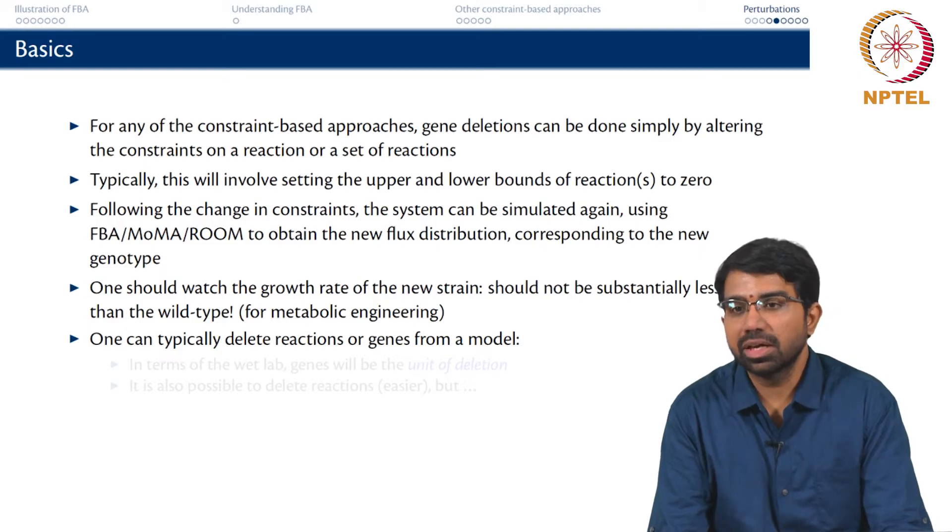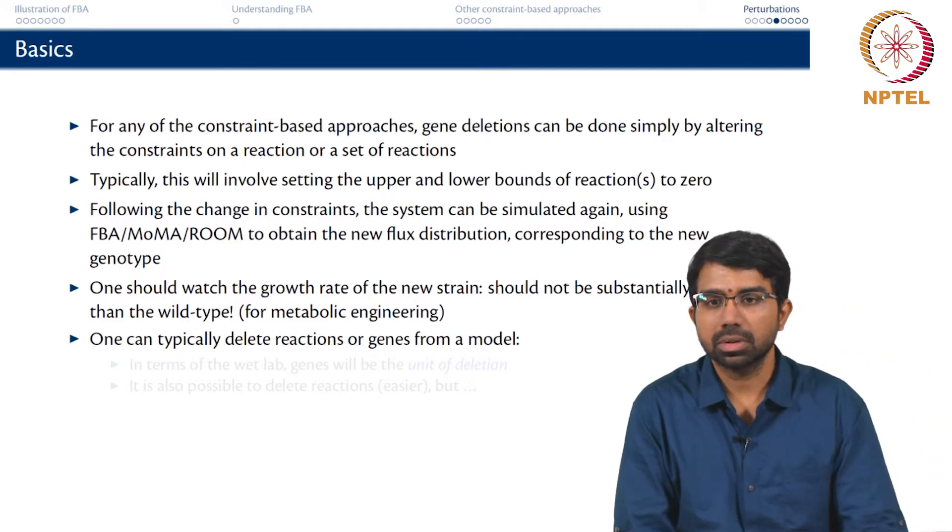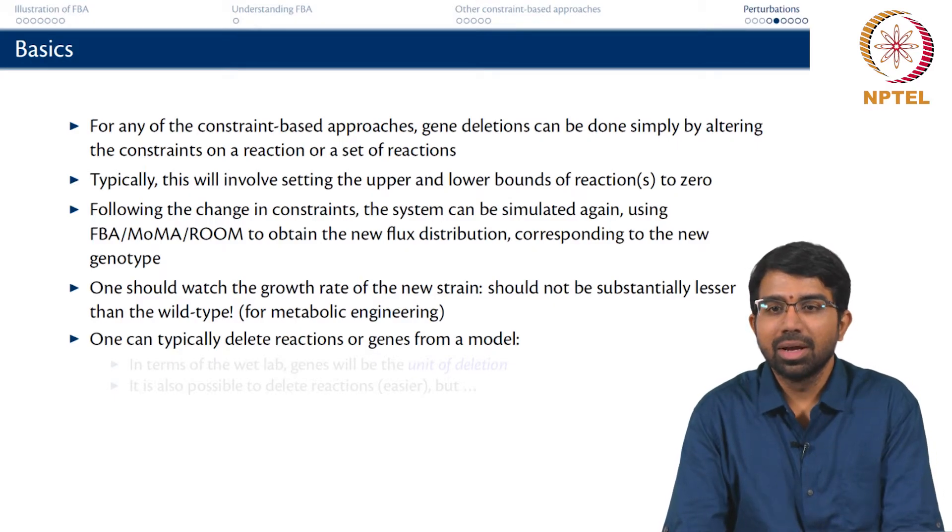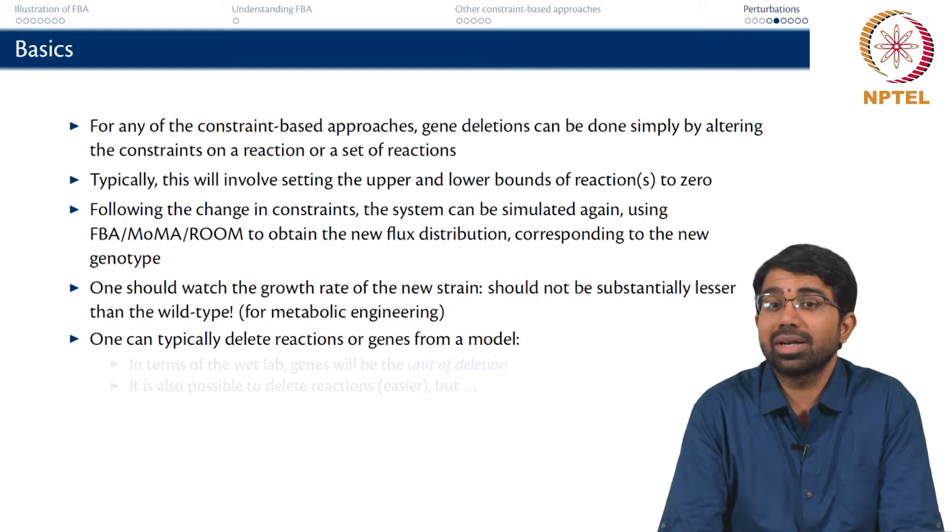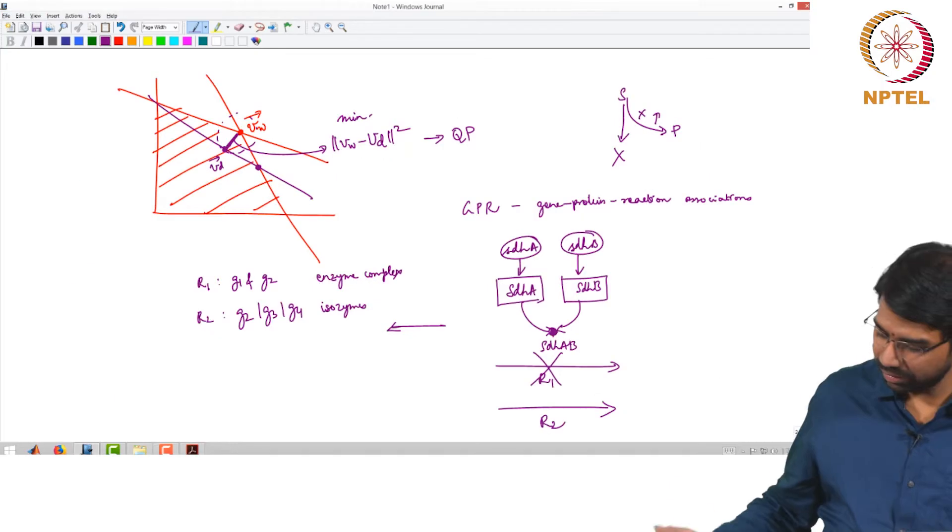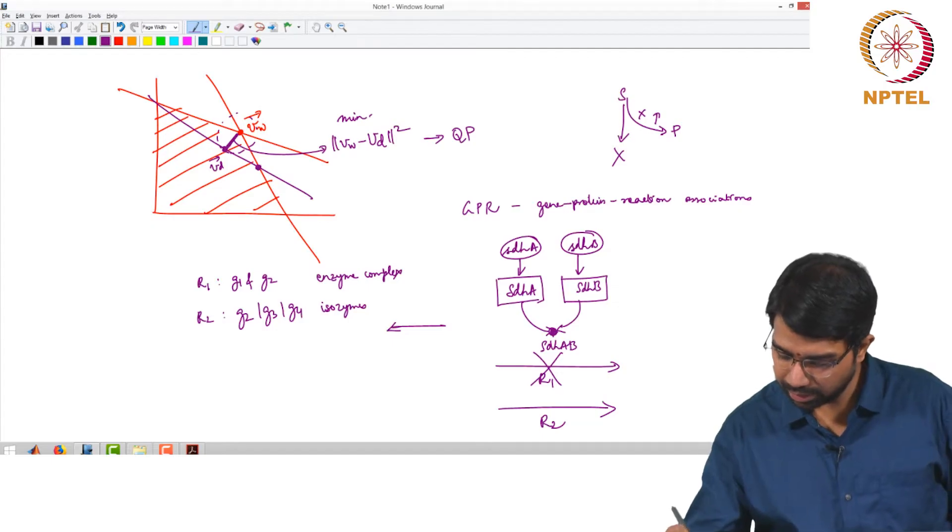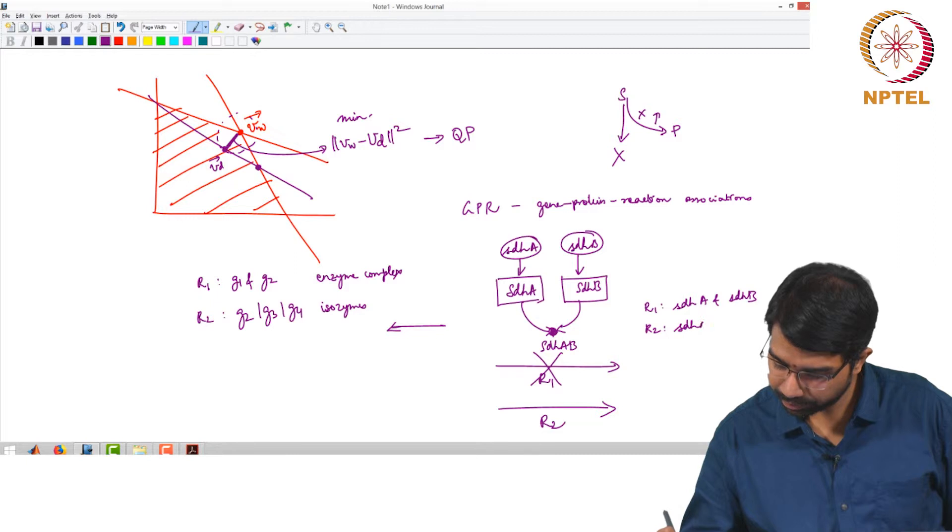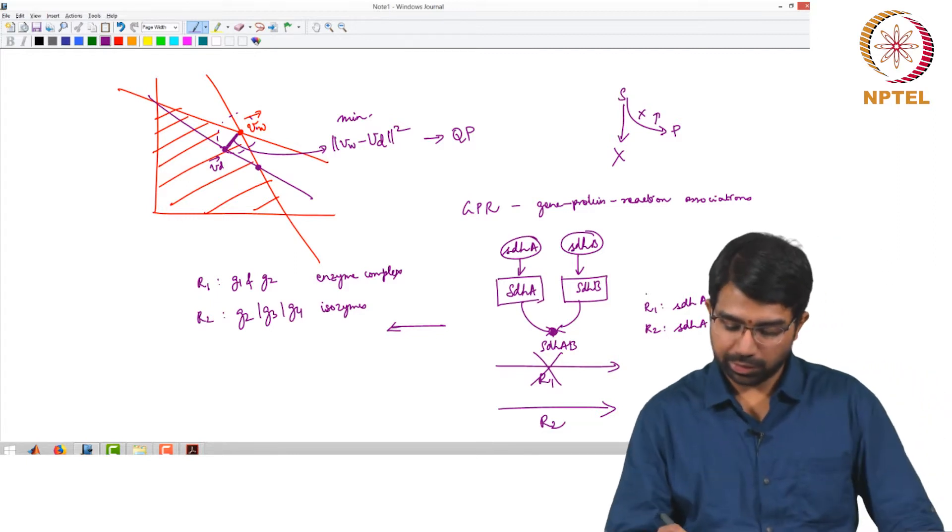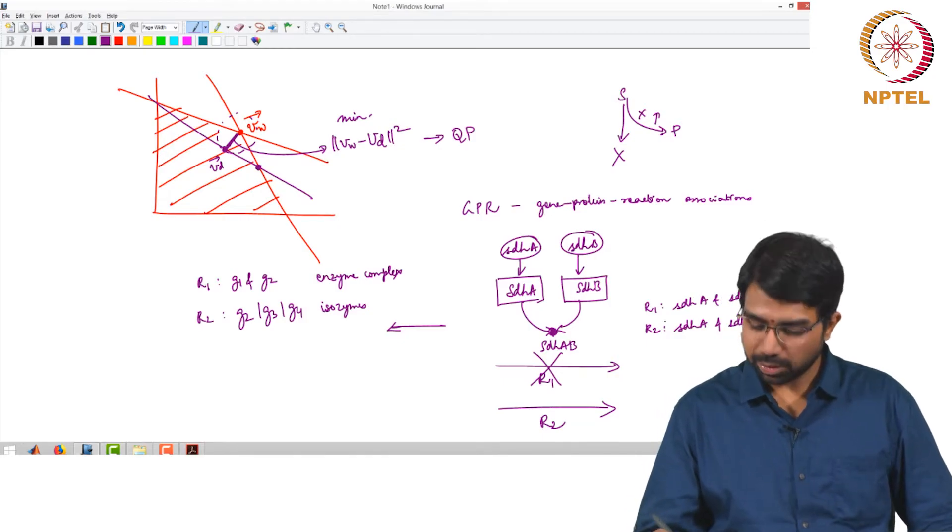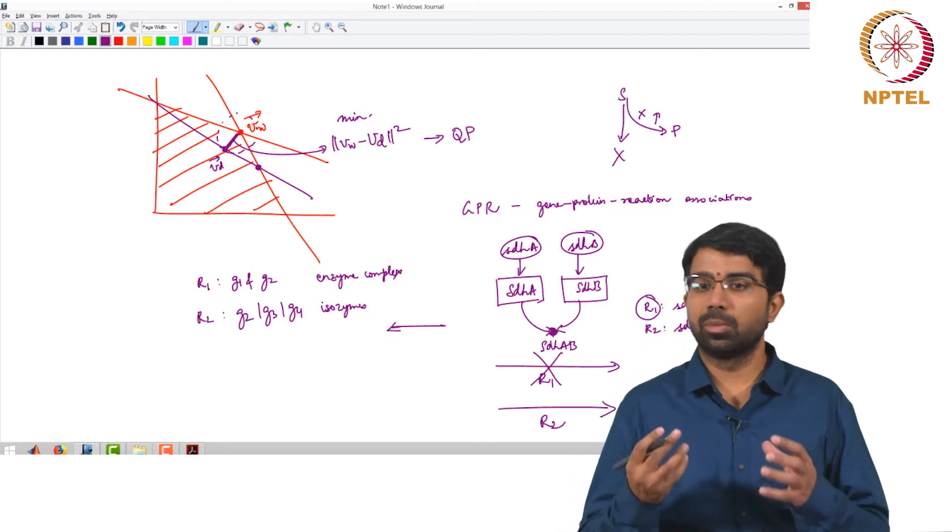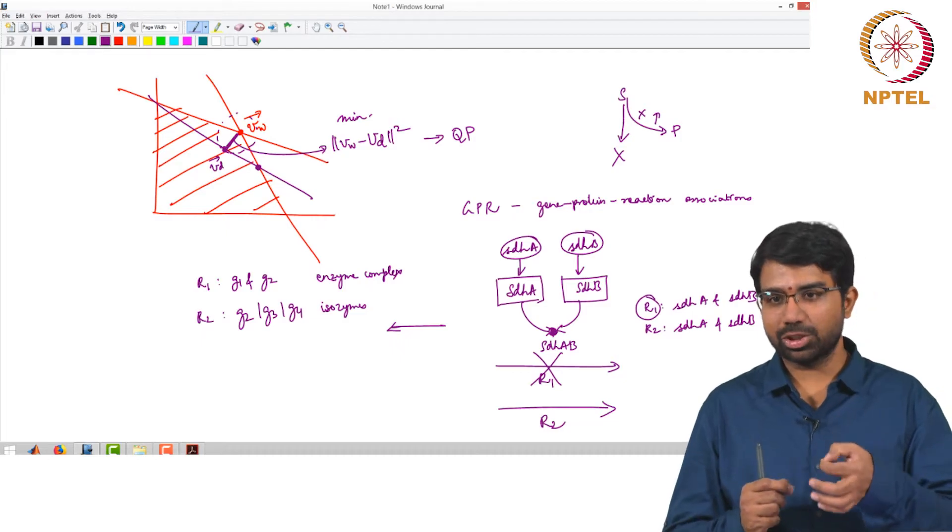You can either delete reactions or genes from a model. So what is the difference between the two? It will finally have to result in the reaction deletion. But then when you delete reactions alone, you may be doing some unacceptable deletions. As I showed in the previous example, you could not have deleted R1 alone. There was no way to delete R1 alone. The reaction still remains the unit of the model. The unit in the model which you can delete still remains a reaction.